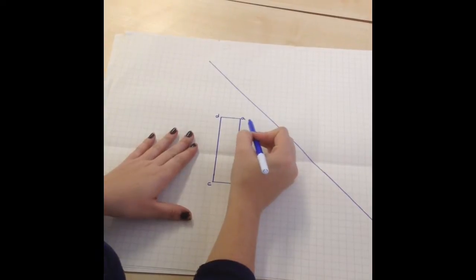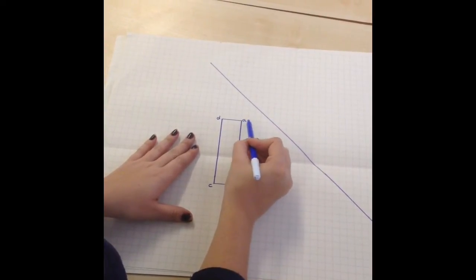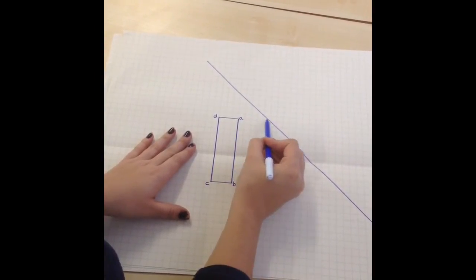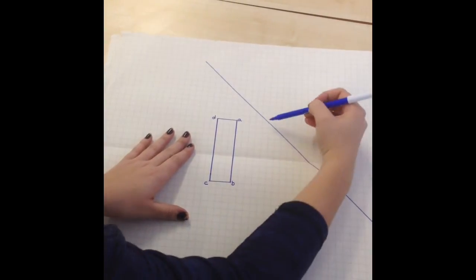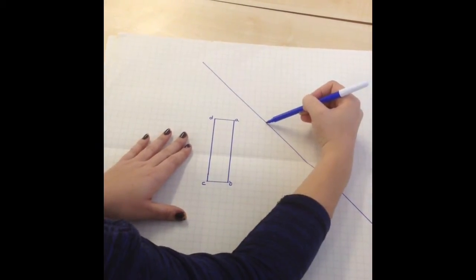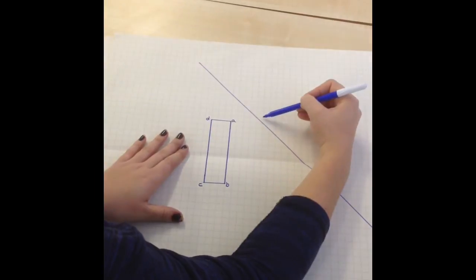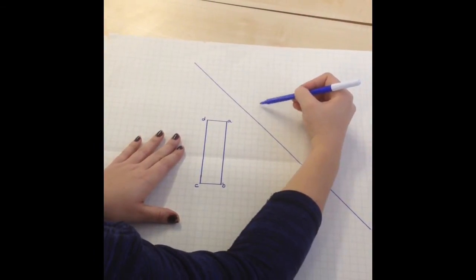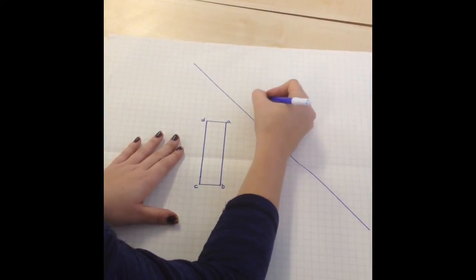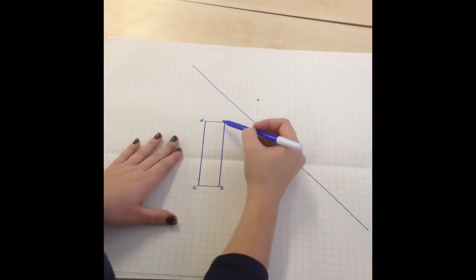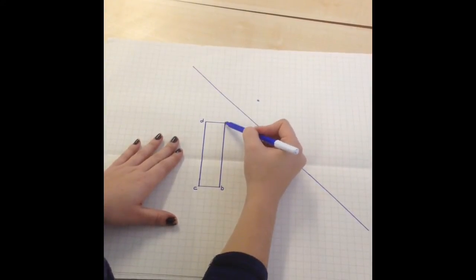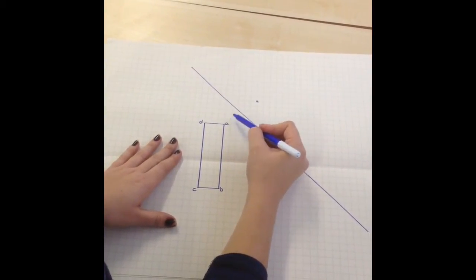You can either count the squares from the vertices A so that would be 1, 2, 3, 4, 5. So I've counted them horizontally which means I would then have to count them vertically. So 1, 2, 3, 4, 5 and that would be point A.